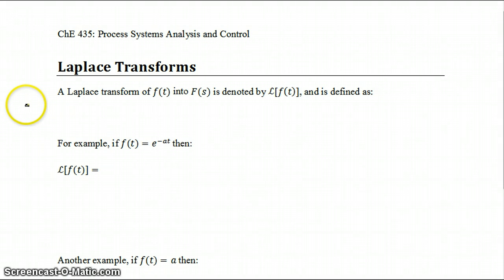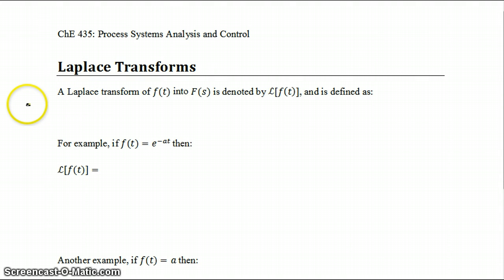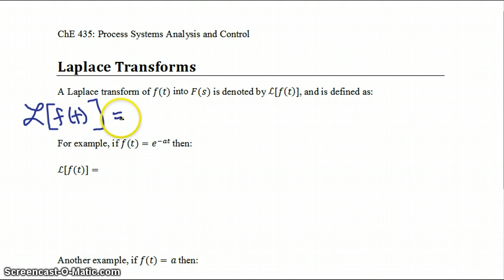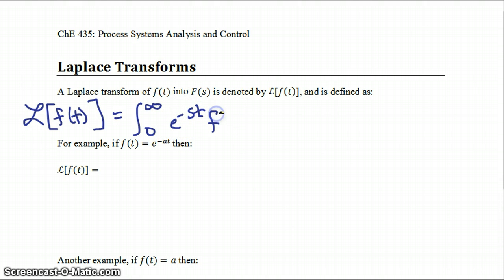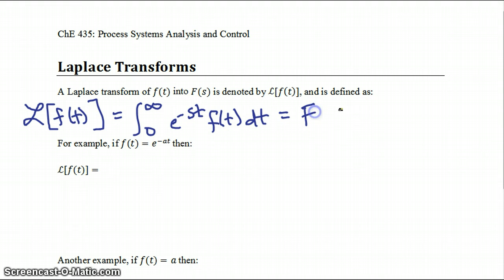The Laplace transform of f(t) into F(s) is denoted by the script L operator, defined as the integral from 0 to infinity of e to the minus st times f(t) dt. The function it equals in the Laplace domain is denoted by a capital F of the new variable s.